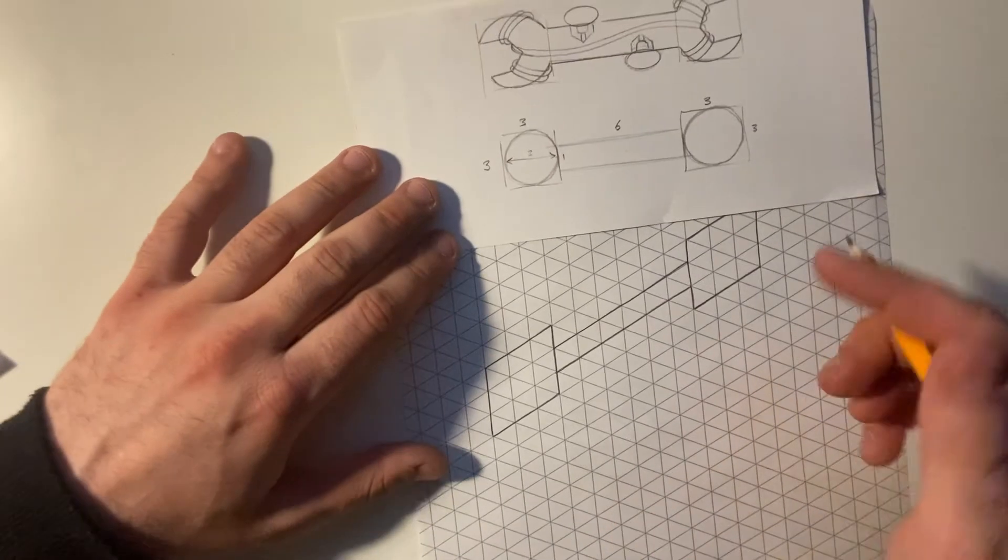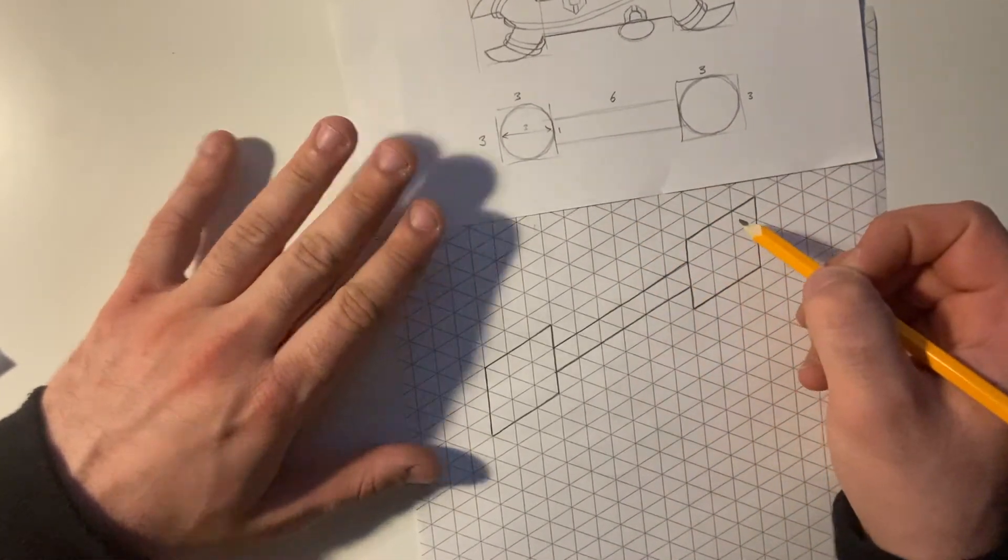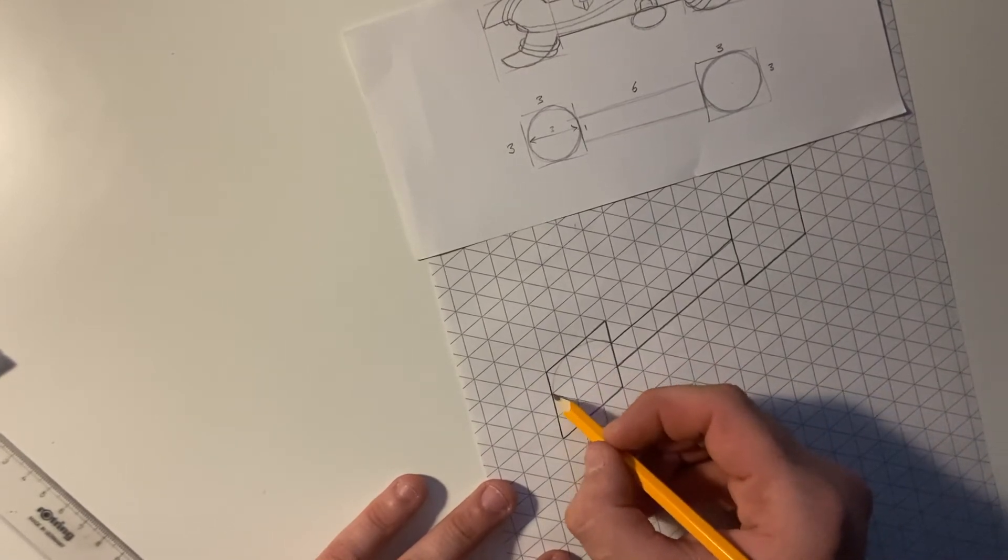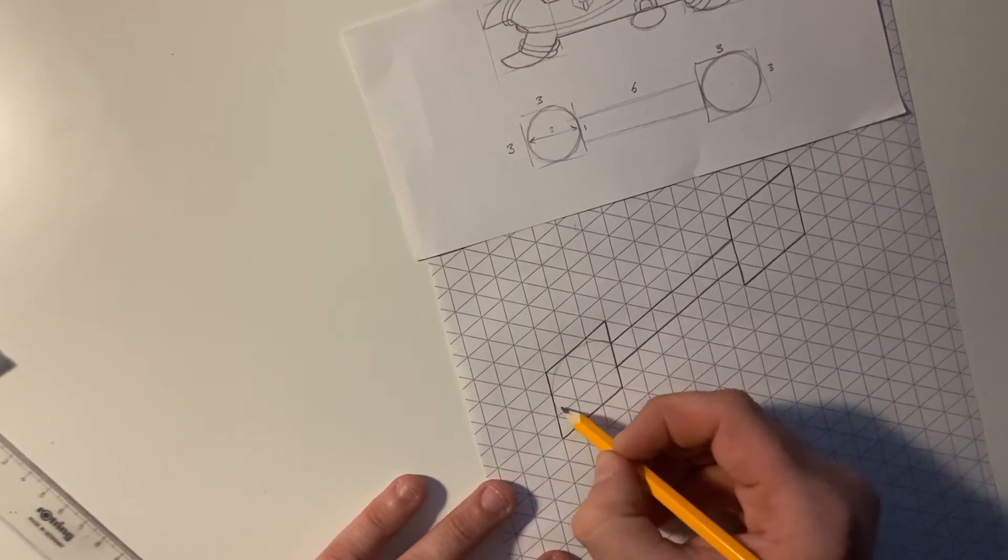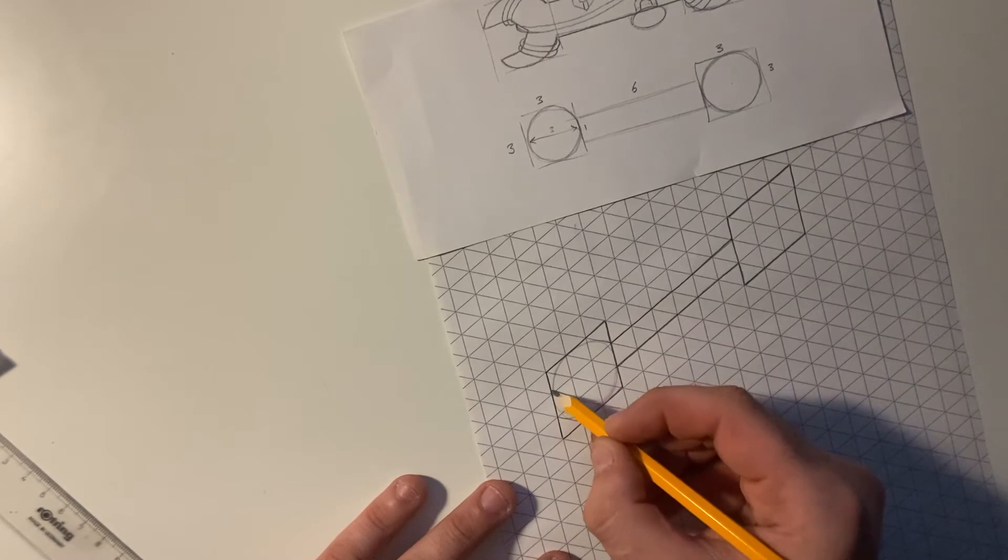So as I convert these circles into isometric, they'll actually become ellipses. OK, so I'm just going to plan out very lightly those circles, which are now ellipses, onto my span of the head.